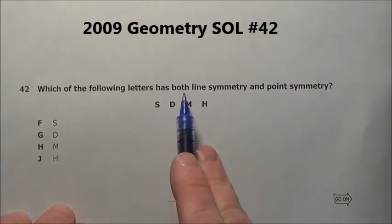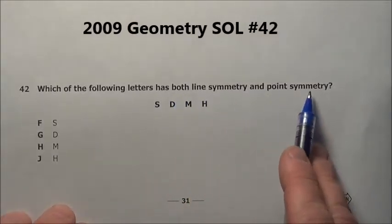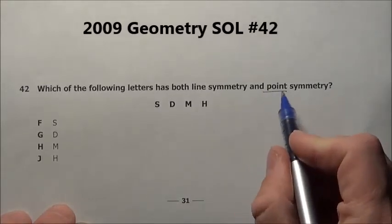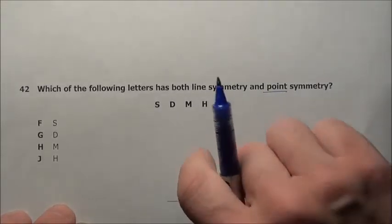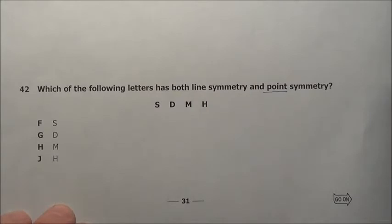Problem 42, it says which of the following letters has both line symmetry and point symmetry? Now remember point symmetry just is reflection symmetry. Can you spin it and it would land on itself?